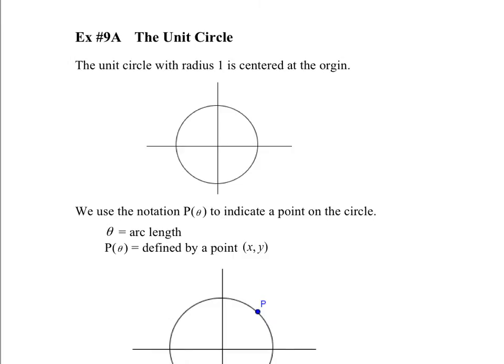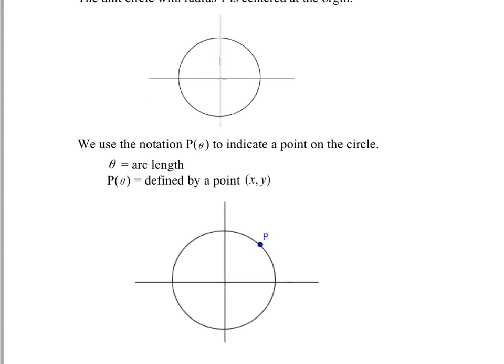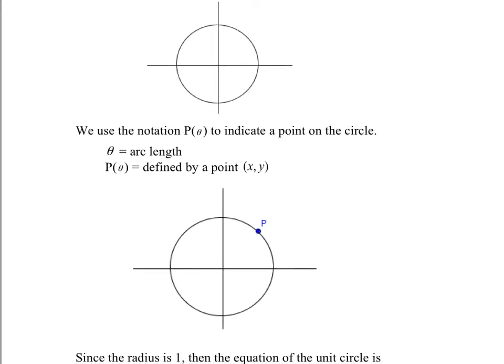The unit circle has a radius of 1, so this length right here would be 1, and it's centered at the origin, so 0,0 is the center of the circle. We'll use the notation P brackets theta — P at theta — and it represents the point with a certain angle on the unit circle.